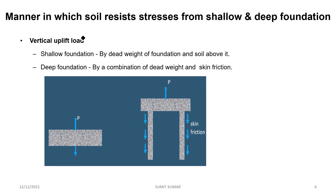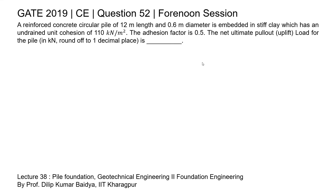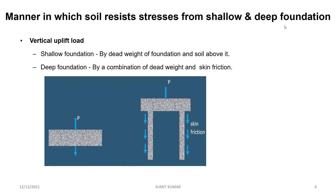For uplift load in a shallow foundation, the uplift load is balanced by the dead weight of the foundation and the soil above it. In a deep foundation, the uplift load is balanced by the dead weight and skin friction. In our question, we need to calculate the pullout, that is uplift load, which can be calculated from the skin friction.